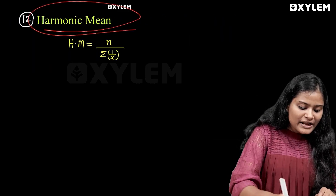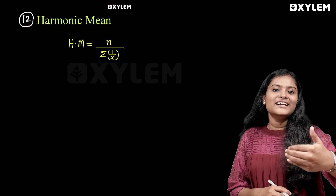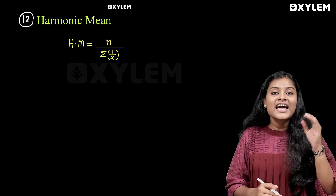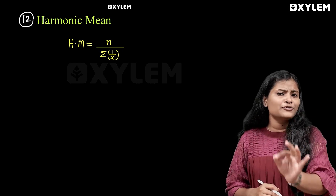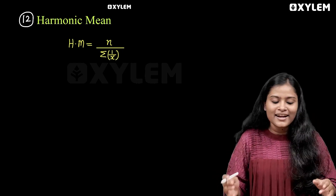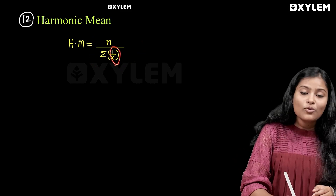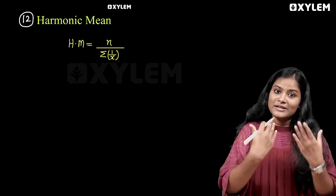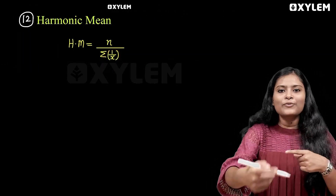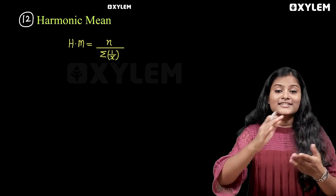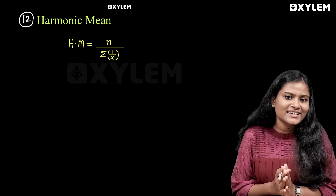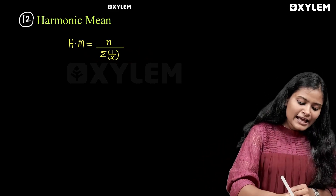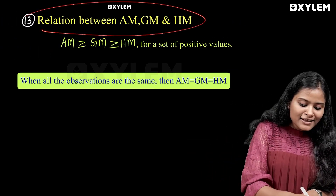Next, we have the harmonic mean. If you are interested in this case, you will find the average speed — you will find the harmonic mean. If you ask the question, what is the average speed? It is the harmonic mean. The equation is n divided by summation of 1 by x. You will take all the values. There is the number of observations in the denominator.